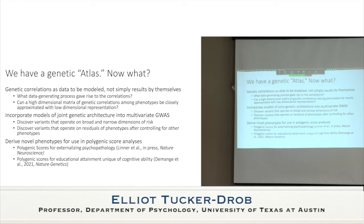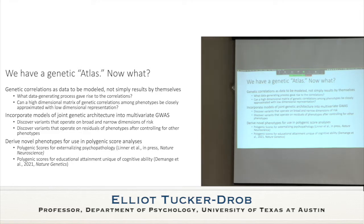For example, a recent paper I was part of did a GWAS of externalizing psychopathology — a general dimension of risk-taking related to substance use, risky sex, driving past the speed limit, and similar behaviors — and created a polygenic index from the multivariate GWAS for use in prediction samples. In another paper, we took the educational attainment GWAS, removed the signal from the intelligence/cognitive ability GWAS, and what remained was the non-cognitive portion of educational attainment: things like intellectual curiosity, self-control, and planfulness.